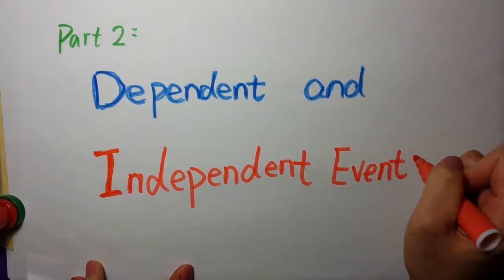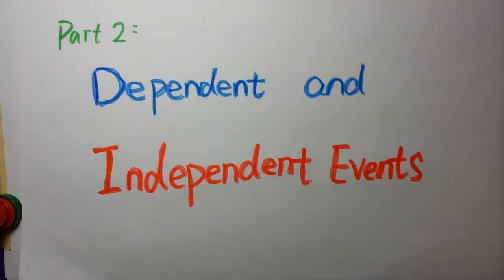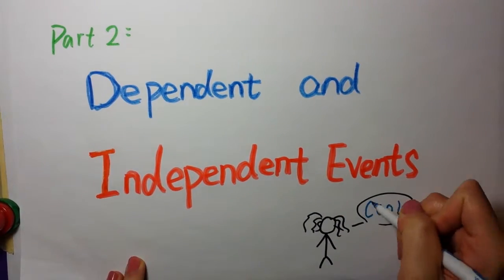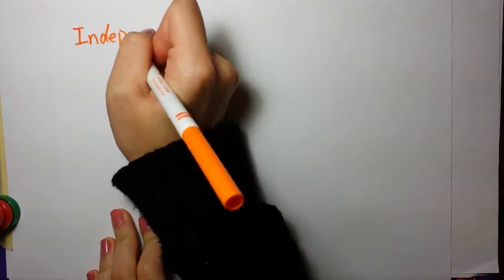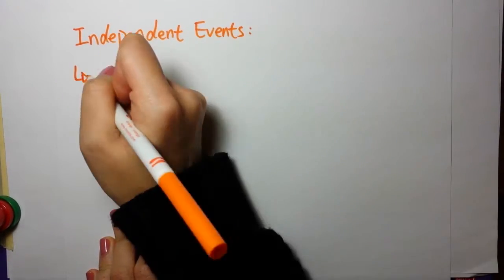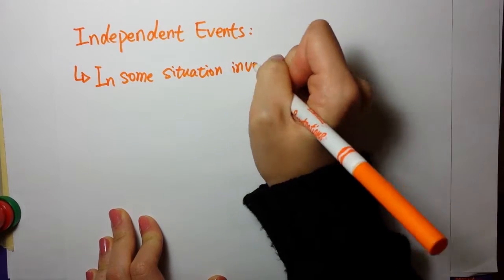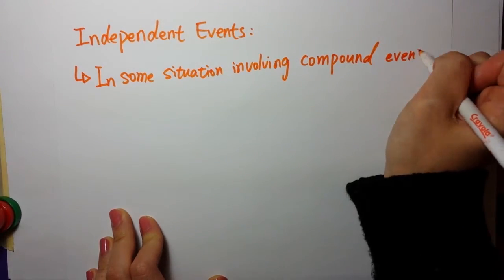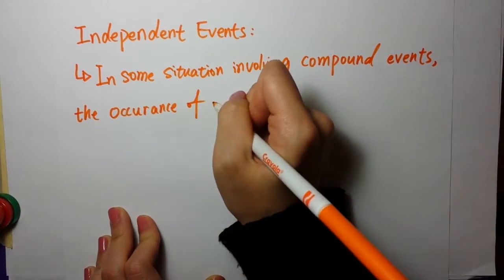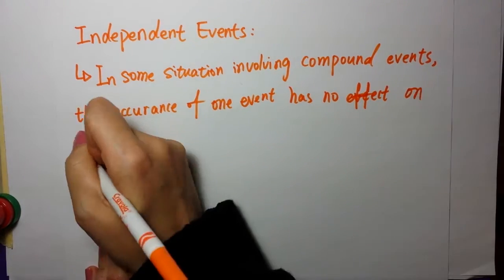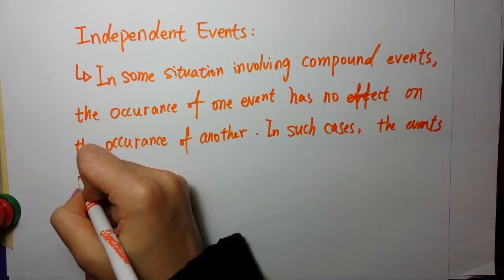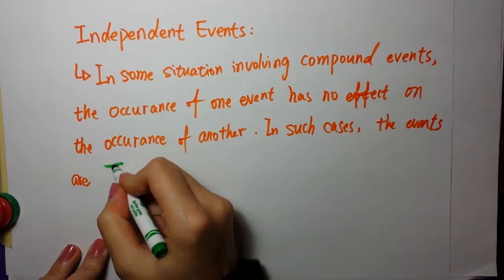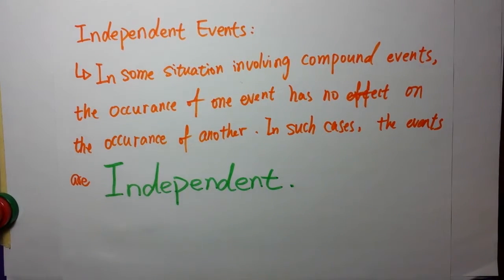This topic is dependent and independent events. In these situations, you are dealing with compound events involving two or more separate events. What are independent events? In some situations involving compound events, the occurrence of one event has no effect on the occurrence of another. In such cases, the events are independent.